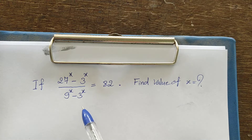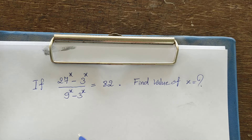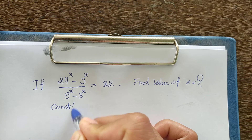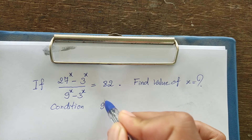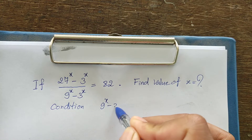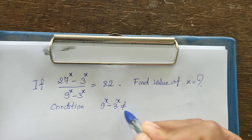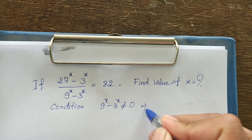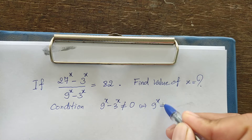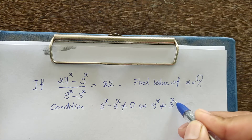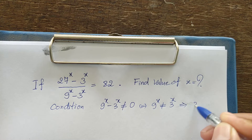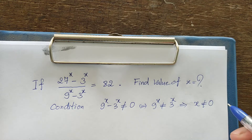Before we solve this equation, we must take the condition. The condition is: 9 to the power of h minus 3 to the power of h is not equal to 0. So we get 9 to the power of h is not equal to 3 to the power of h, which means h is not equal to 0.